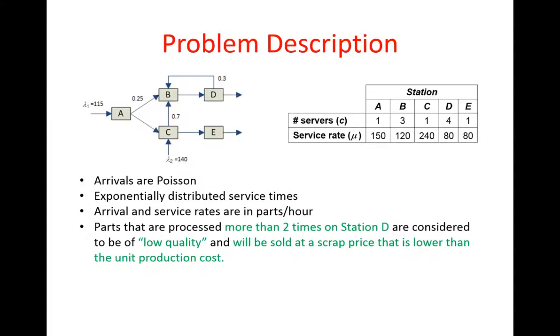However, we are going to assume that parts that are processed more than two times on station D—as you can see we have this reentrant flow that goes from station D back to station B—so some parts will be processed multiple times on station D. Our assumption here is that parts that are processed more than two times on station D are considered to be of low quality. So these parts will be sold at a scrap price that is lower than the unit production cost.